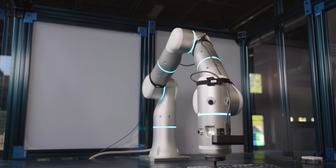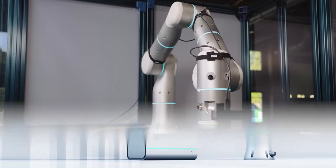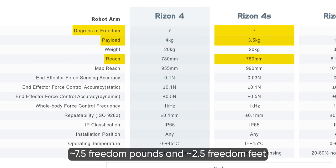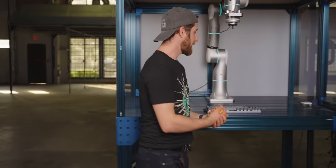With the FlexivRizen 4S, we intend to find out. It's got seven degrees of freedom, can move payloads as heavy as three and a half kilograms, and can reach over 780 millimeters. We've spent months getting this guy up and running to a degree that we deem satisfactory to start sharing the data with you.